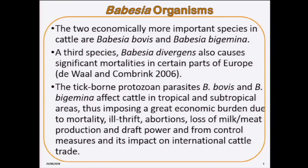Both Babesia bovis and Babesia bigemina are the two economically more important species in cattle. The third species, Babesia divergens, which causes similar mortalities, has been identified in some parts of Europe. These protozoan parasites affect cattle in those regions.